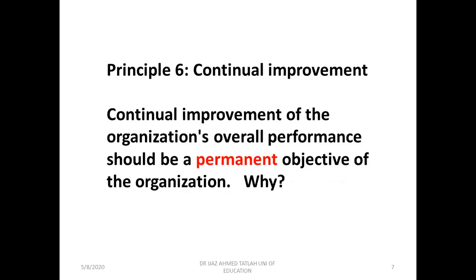Another principle of quality management is continual improvement. Continual improvement of the organization's overall performance should be a permanent objective of the organization, because quality is not bounded — it is an ongoing process, a lifelong process, without which products cannot be uniform and cannot be of good quality. So it is a permanent objective that the overall good performance of the organization is continuously pursued.